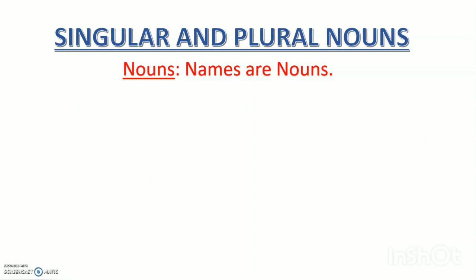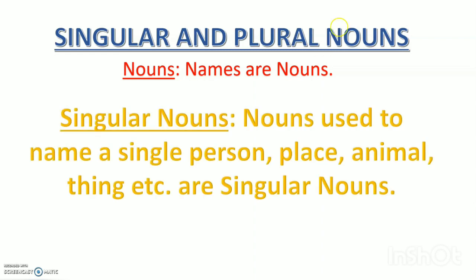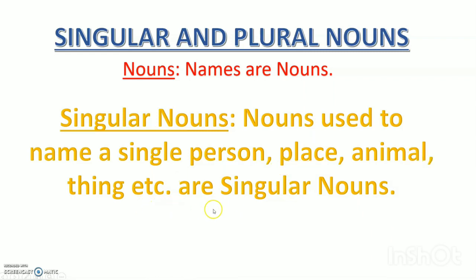So, what are singular nouns? Nouns used to name a single person, place, animal, thing, etc. are singular nouns. Names which indicate the name of a single person, place, animal, thing, etc. are singular nouns.